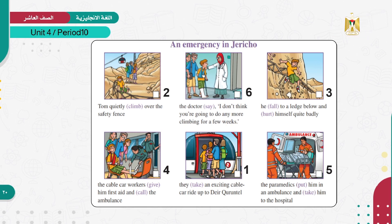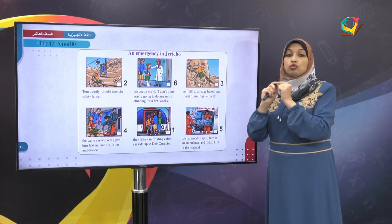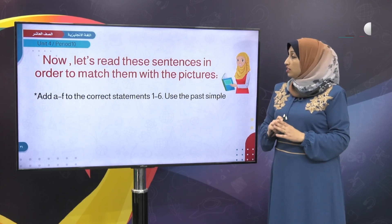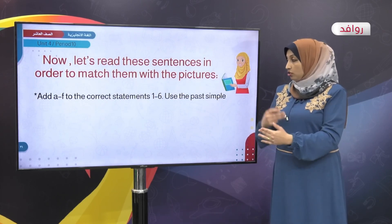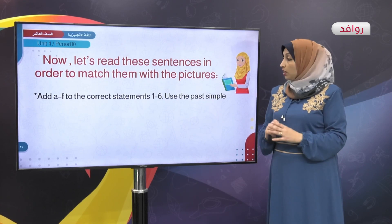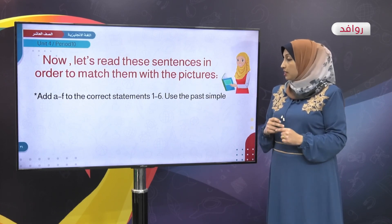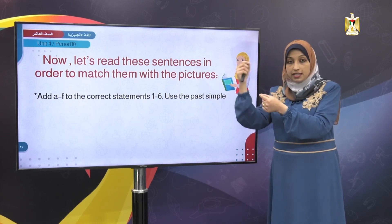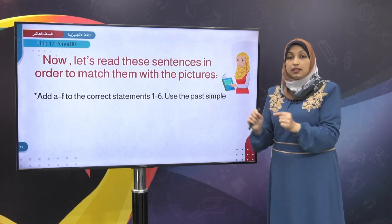Now let's make full sentences — write the complete story. We'll take the sentences from above and complete them with the sentences below the pictures in order. The sentences from above are already arranged and ready; we only need to change the verbs. Now let's read these sentences in order to match them with the pictures — adding letters A to F to the statements numbered 1 to 6.